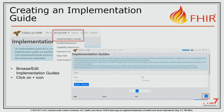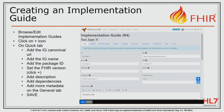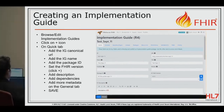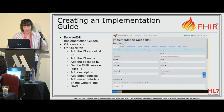This is just creating an implementation guide. You click on the plus icon down at the bottom there. Then creating an implementation guide — you browse, edit your implementation guide, click on the plus item, and then you can add all your information in here. So you would add your canonical URL, the name of the implementation guide, the title, all these things. You can add descriptions in here.